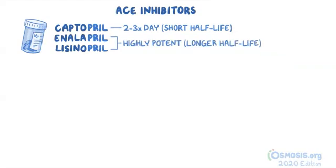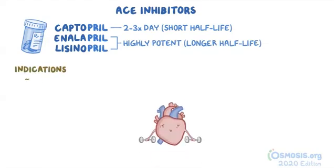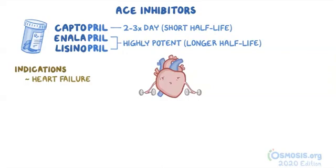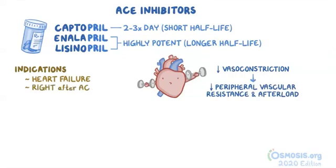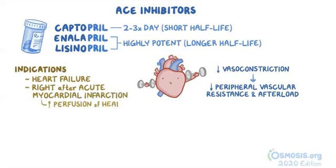Because ACE inhibitors are effective in lowering blood pressure, they can be used not only to treat hypertension, but also to treat heart failure, where the heart isn't strong enough to pump out an adequate amount of blood. The decreased vasoconstriction leads to decreased peripheral vascular resistance and afterload, so the heart doesn't have to pump as hard against that resistance. ACE inhibitors should also be given right after someone suffers an acute myocardial infarction to increase perfusion of the heart and prevent further ischemic damage.